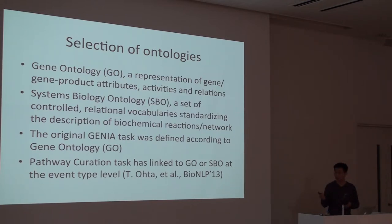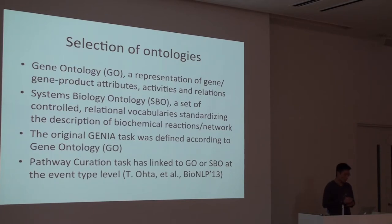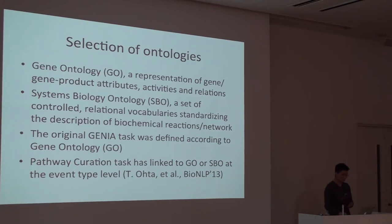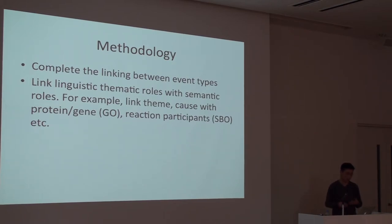The original Genia task was also defined according to Gene Ontology. Although in the last few years with several tasks this definition may have shifted a little, it's still reasonable to start with Gene Ontology. Ota has done a lot of work to link the GO and the SBO in the pathway curation tasks at the event type level. At the moment, we are linking all the event types in the BioEvents corpus with the ontologies, and at the same time trying to link them at a higher information granularity.